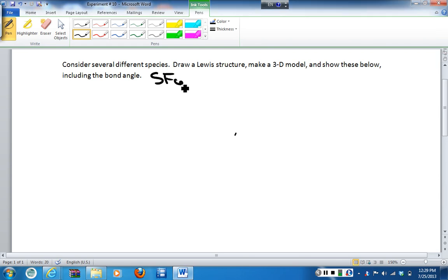The first step in the Lewis structure is we need to determine the total number of valence electrons in the molecule. Sulfur, there is one of them. Sulfur is in group 6, so 6 valence electrons. Fluorine, there are 6 of them, each contributing 7 valence electrons because fluorine is in group 7. And so we add these up, and when we are done we need to make sure that this molecule has 48 valence electrons.